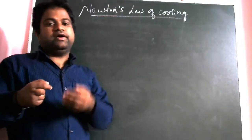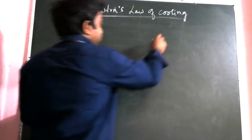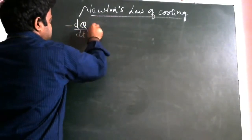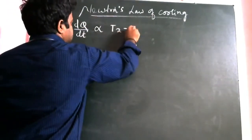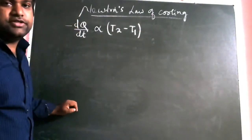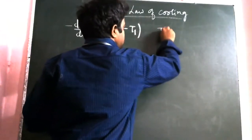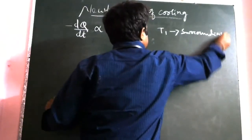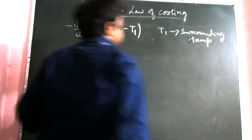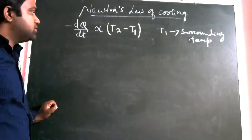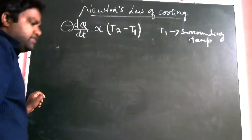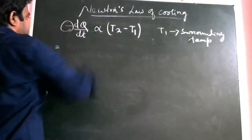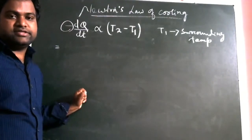So Newton experimentally and theoretically told that the rate of cooling, that is minus dQ by dt, is proportional to the temperature difference. T1 is considered the surrounding temperature, which is approximately constant, and T2 is the temperature of the object. I have given a negative sign because cooling means heat is being lost — a negative sign indicates a decrease, meaning there is a loss of heat.